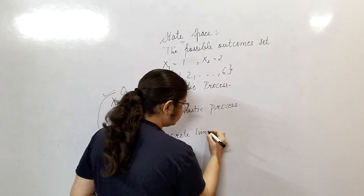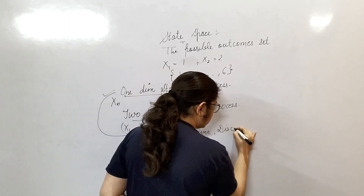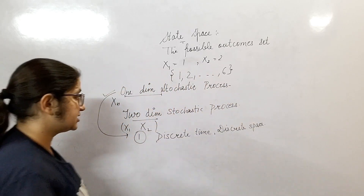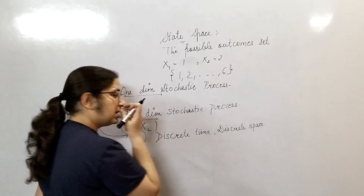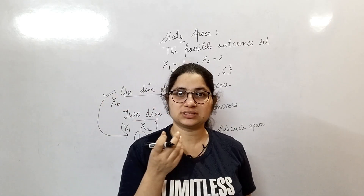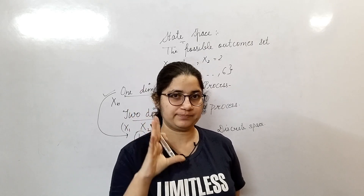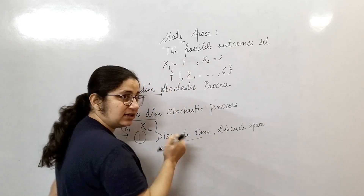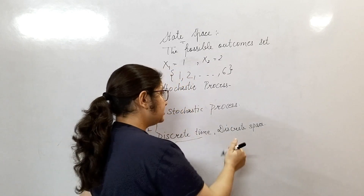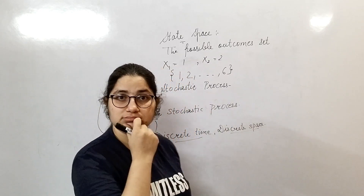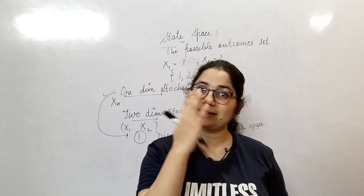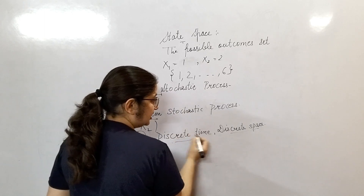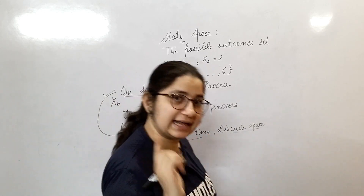The first type is discrete time and discrete space. For example, the number of admissions in a particular school at 10 a.m. Here, time is discrete — I am talking only about 10 a.m. And the space is also discrete, since the number of admissions will be either one, two, three, and so on. So the example for discrete time and discrete space is: number of admissions in a school at 10 a.m.